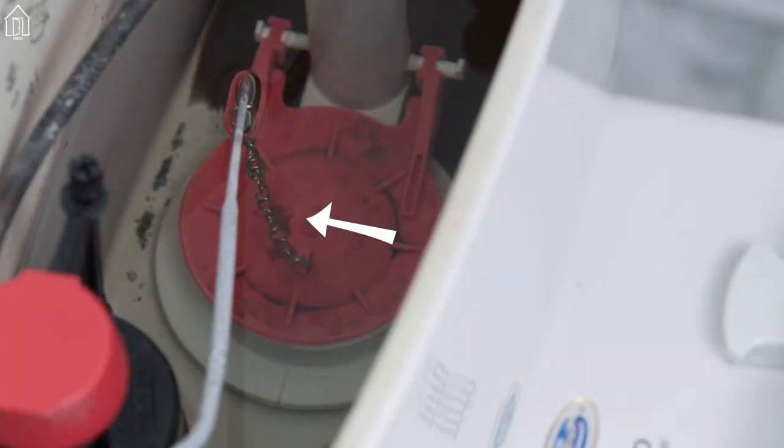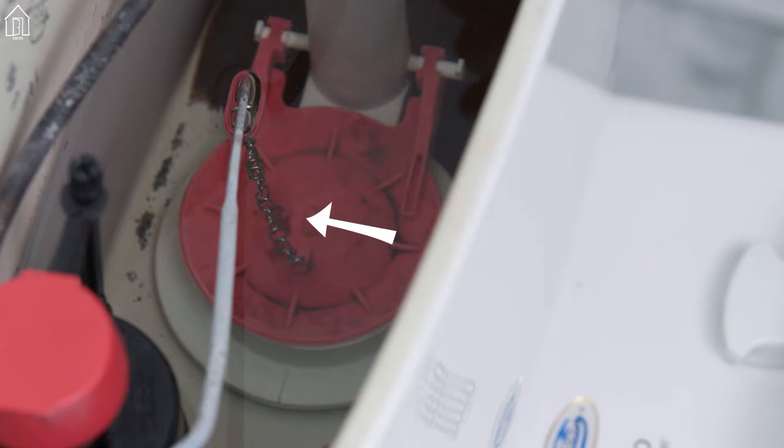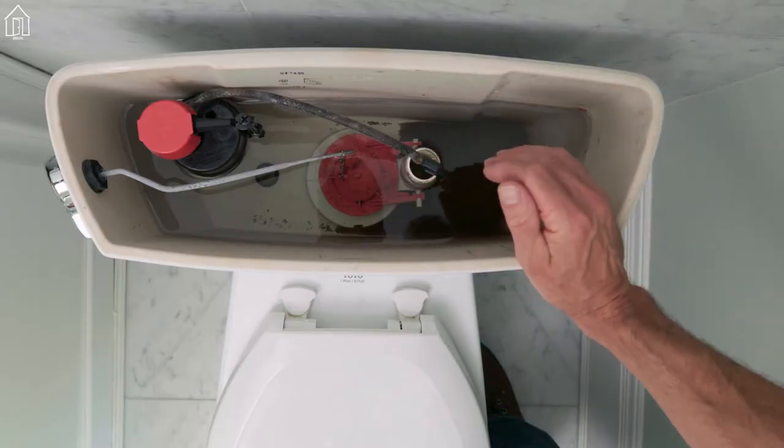If the chain is too long, it can get stuck underneath the flapper and prevent a seal. If it's too short, it can prevent the flapper from closing all the way.